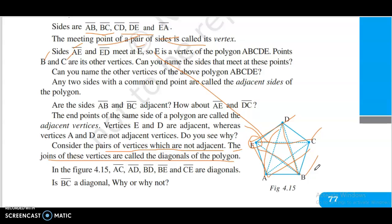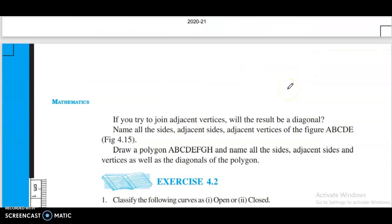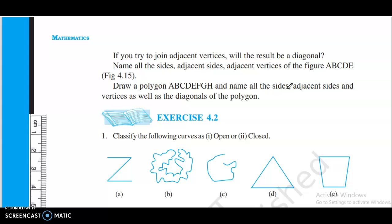Is BC a diagonal? The teeth join adjacent vertices, presumably not a diagonal. Name the sides. AB, BC, CD, DE, and CE. Name all the sides and vertices as well as diagonals of the polygon.